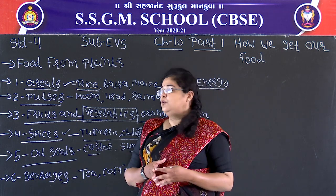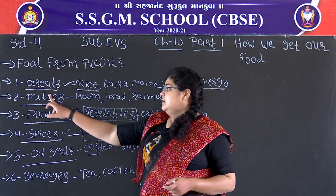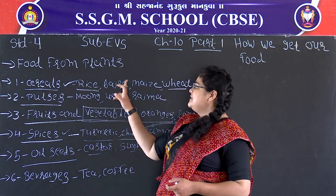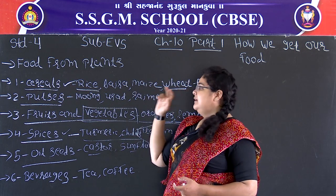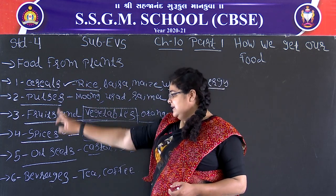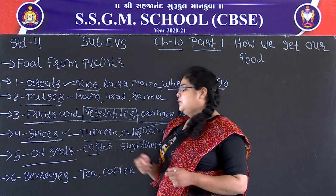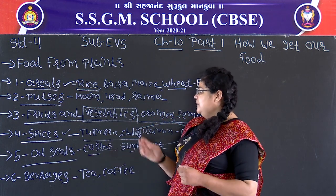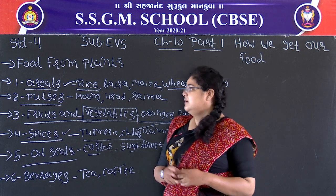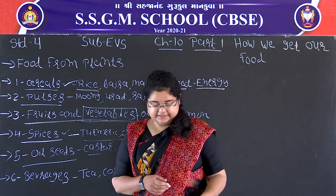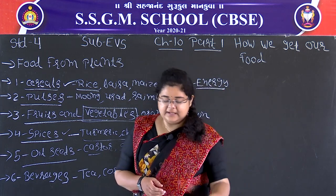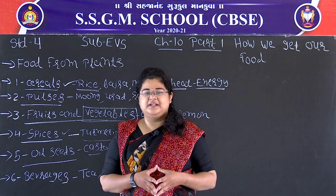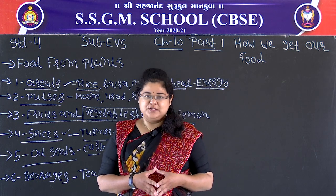For homework, you need to mention the six types of food from plants — cereals, pulses, fruits, vegetables, spices, oils, and beverages — and write which food items can be included in each category. Please like, share, and subscribe to our YouTube channel. Thank you. Jai Shri Swami Narayan.